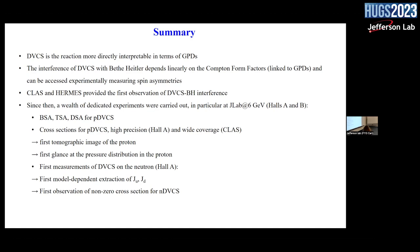In summary: DVCS is the reaction most directly interpretable in terms of GPDs. The interference of DVCS and Bethe-Heitler depends linearly on CFFs and is accessed via spin asymmetries. CLAS and HERMES provided the first DVCS–Bethe-Heitler interference evidence; since then, a rich program at JLab at 6 GeV measured beam and target spin asymmetries, double asymmetries, cross-sections, and cross-section differences. This yielded the first tomographic image of the proton, the first glimpse at the proton pressure distribution, and neutron DVCS measurements in Hall A that showed the importance of this channel for extracting Ju and Jd — the quarks' contributions to nucleon spin.